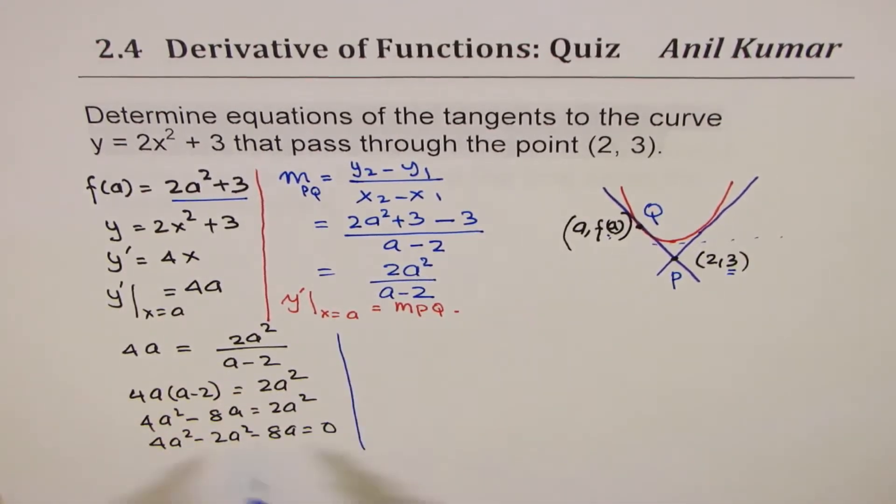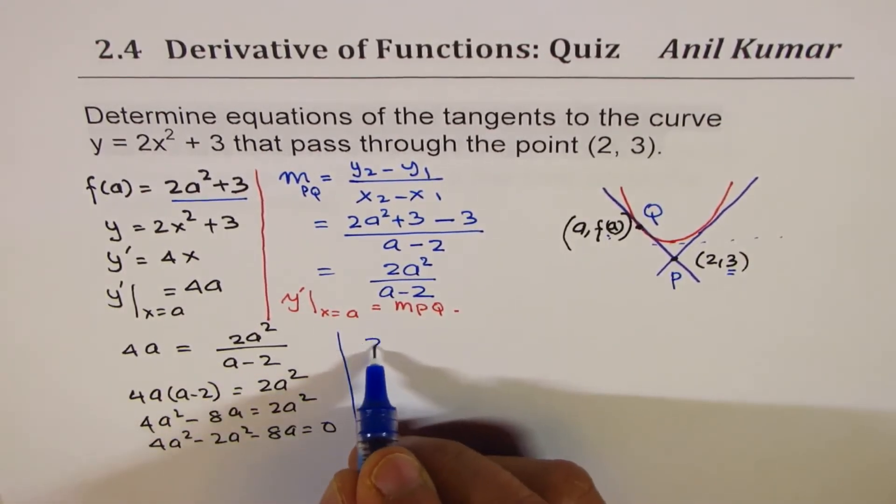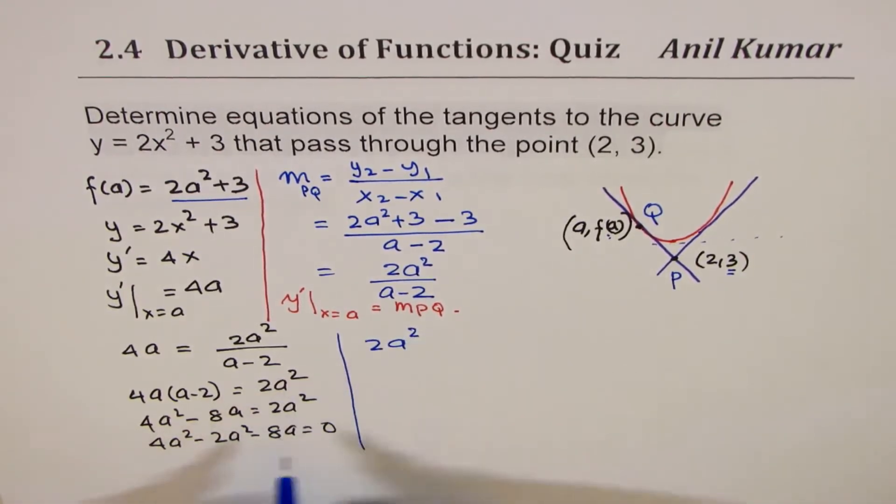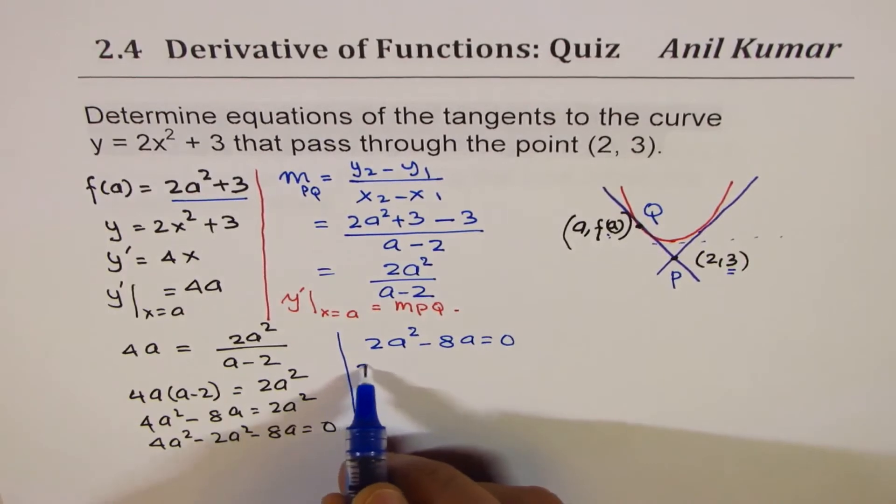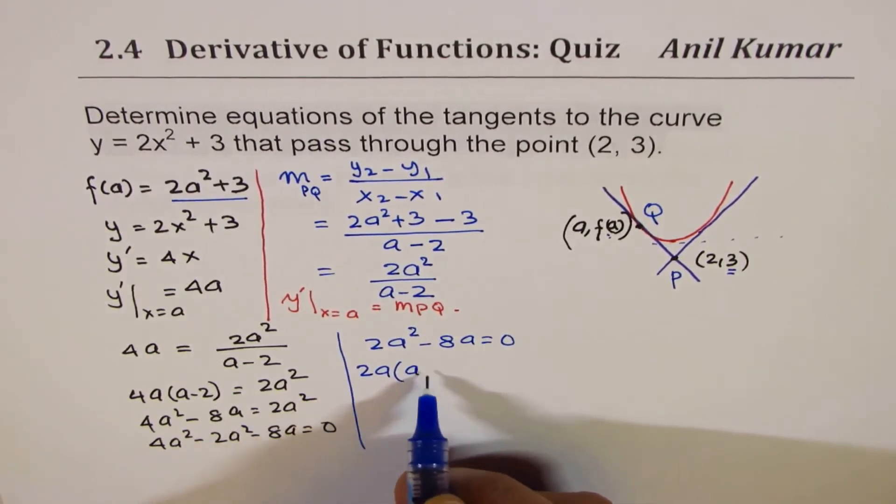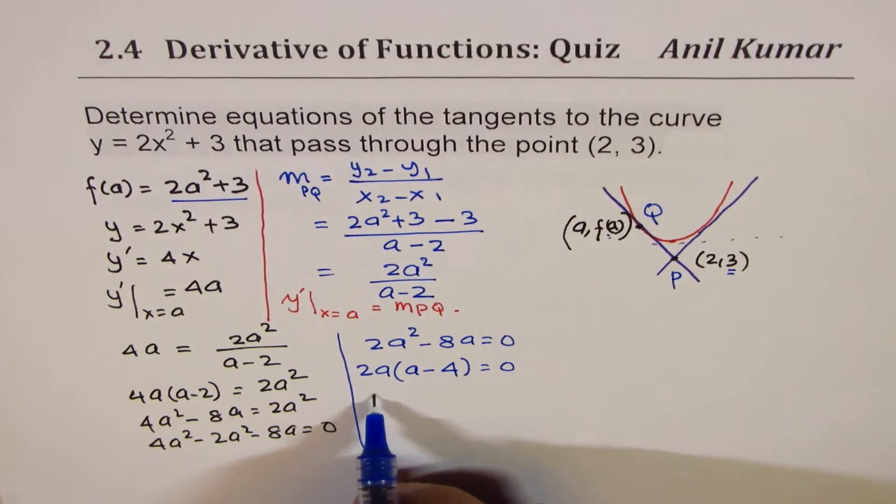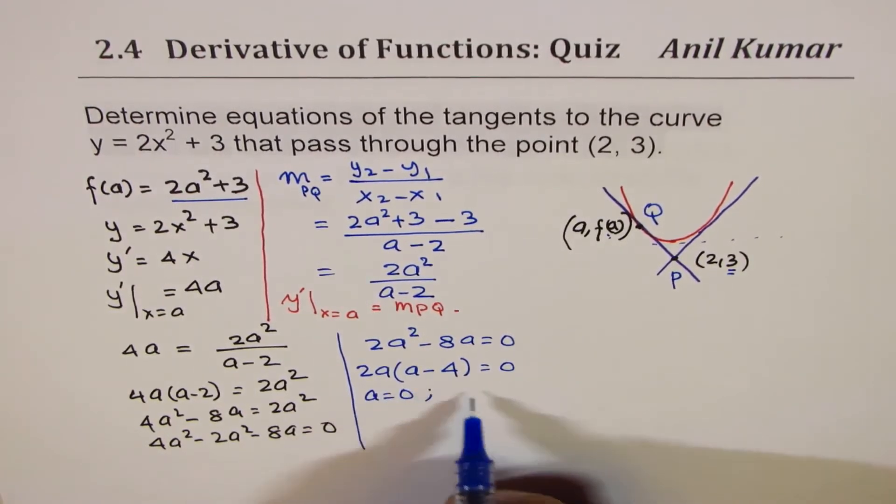Bringing that together, we get 4a squared minus 2a squared minus 8a equals 0. We can solve for a, which is 2a squared minus 8a equals 0. Factoring 2a will give us a(a minus 4) equals 0. That means a equals 0 or a equals 4. So we get two values of a.